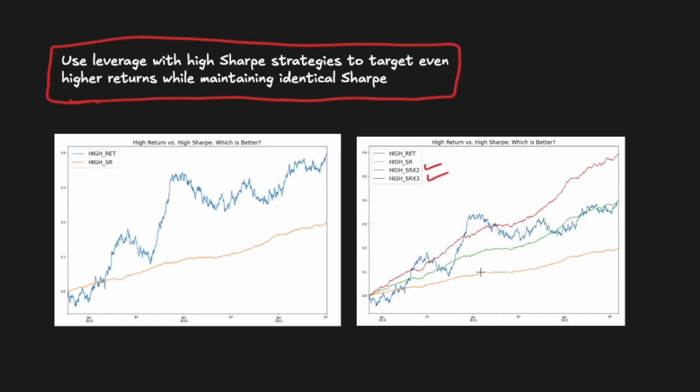And at the same time, we obtain the same or even higher returns than high ret, the blue line. So you really do get the best of both worlds. And to answer our initial question, the best investment here is going to be likely a levered version of the high SR portfolio.